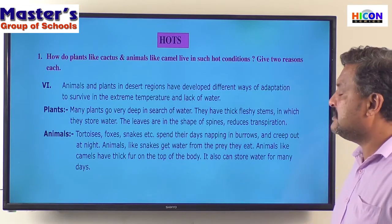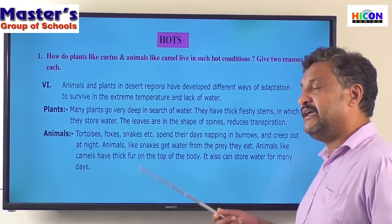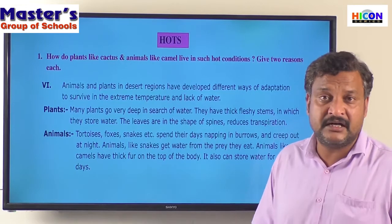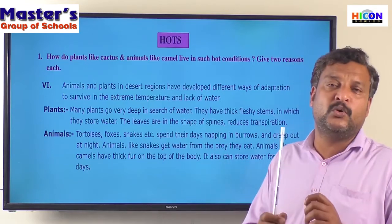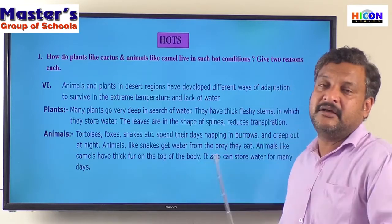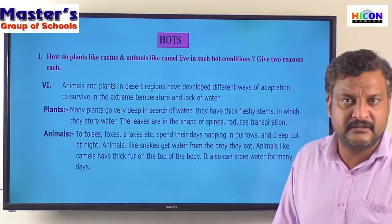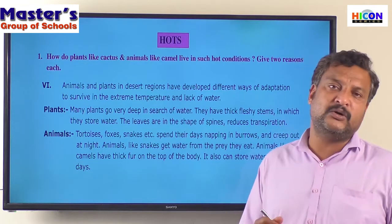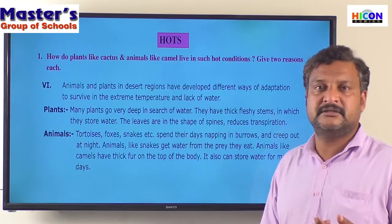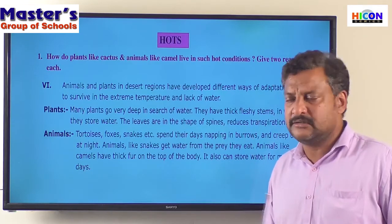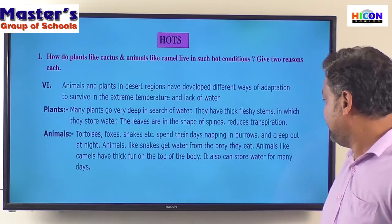Second, animals like snakes get water from the prey they eat. Foxes and snakes eat other animals, and when they do, the liquid, the fluid, the water in the body of that animal gets into their body. These animals need not drink any water because the water already present in the form of body fluids, blood, or stomach water converts into their body water. So they get water from the prey they eat.